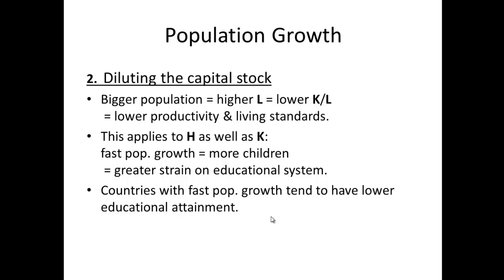The second issue is dilution of capital stock. When we divide capital per person, a larger population means a lower standard of living because capital is spread or diluted across more people — each one gets less. We see this in the education system when we have large classrooms of 30 to 40 students per teacher. That is an example of dilution of capital stock.